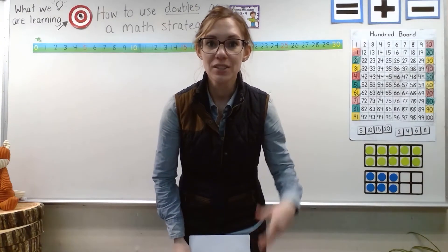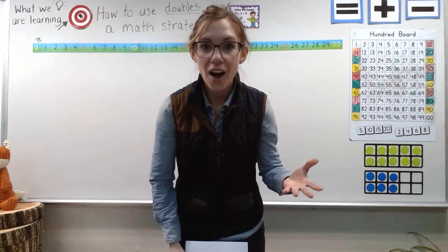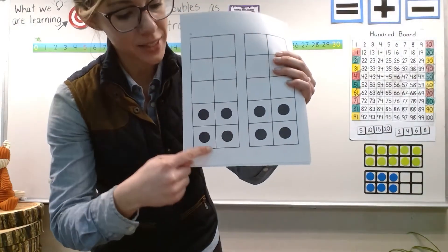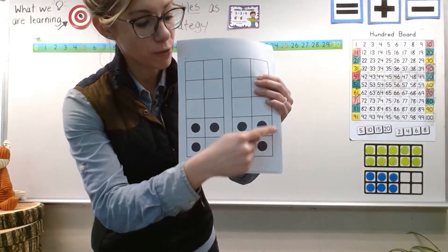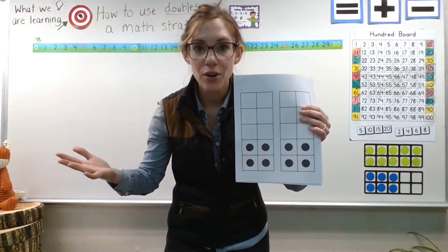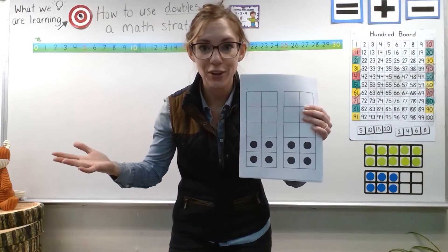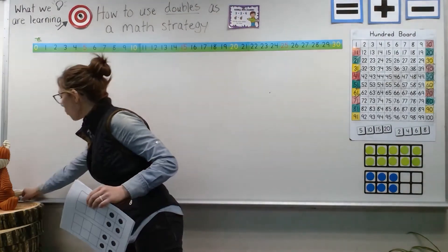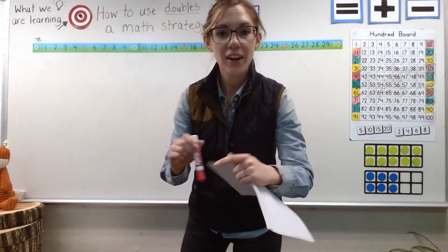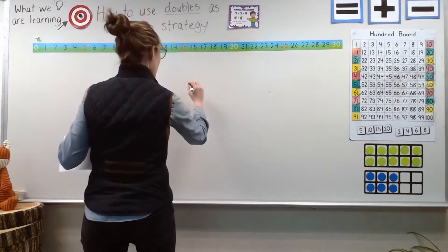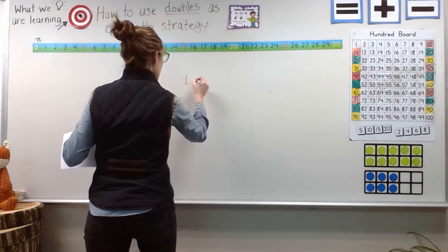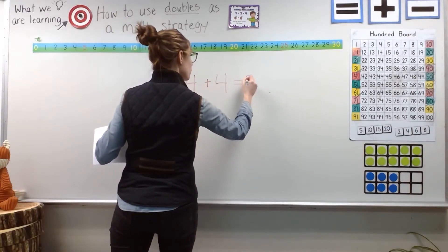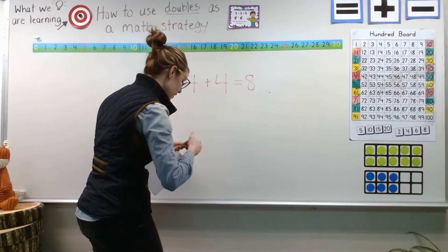How many dots did you see? Great job. You saw four dots in this 10 frame and four dots in that 10 frame. So how many dots are there all together? Eight — nice job, because four plus four equals eight. And if we wrote that as a number model, it would be four plus four equals eight.